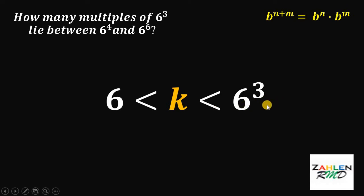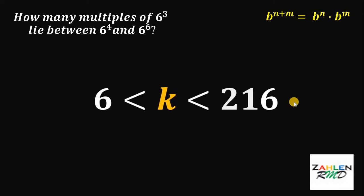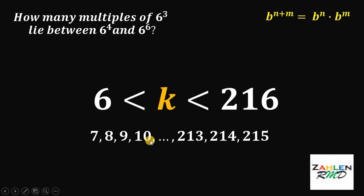We know 6 cube is just 6 times 6 times 6 or simply 216. Therefore, the value of k must be 7, 8, 9, 10, all the way up to 213, 214, and 215.